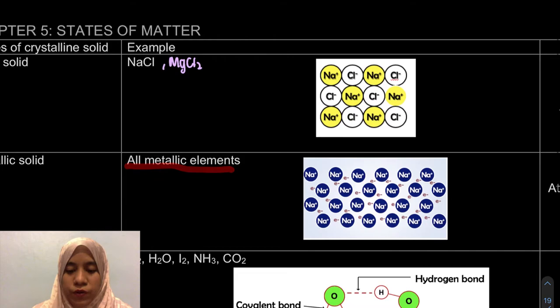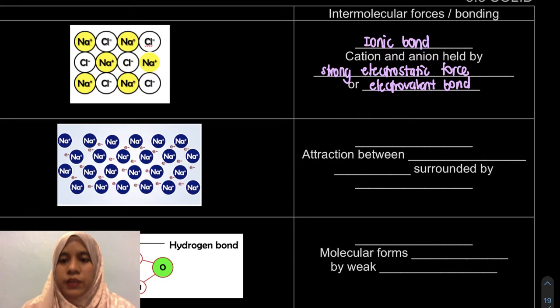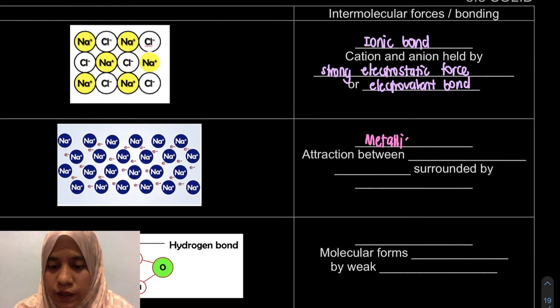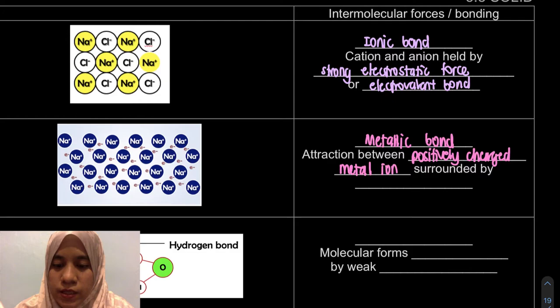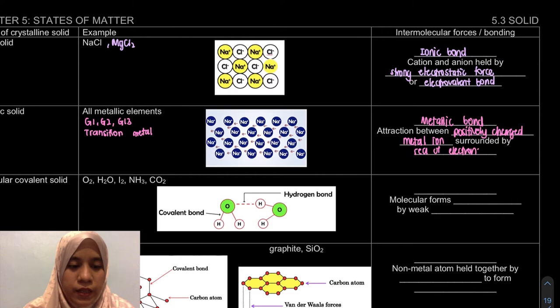The second one is metallic solid. All metallic elements that we learned in 4.5 are elements in group 1, group 2, group 13, and transition elements or transition metals are considered as metallic elements. What is actually the intermolecular forces or bonding? It is actually metallic bond. It is attraction between positively charged metal ions surrounded by a sea of electrons. This is our electron sea model.